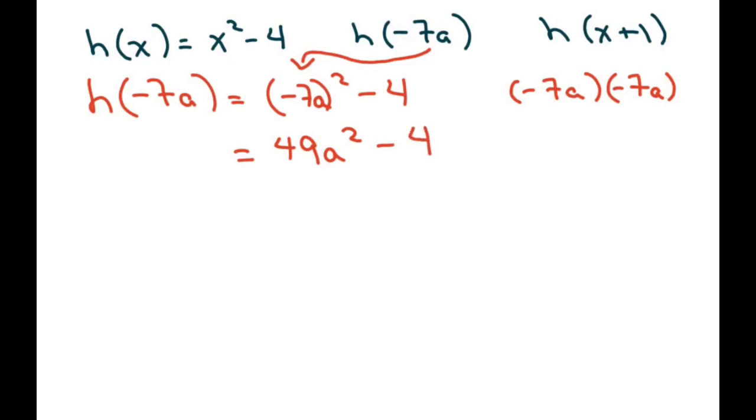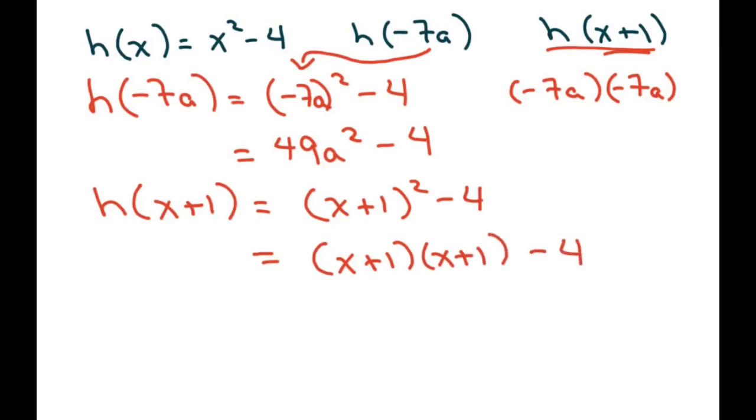And on this one, we're going to do h of x plus 1. Everywhere there's an x, I'm going to put a parentheses, and I'm going to input x plus 1. Now if you know your formulas, you can use that, but basically, I'm just going to write this twice. And you can FOIL this out.